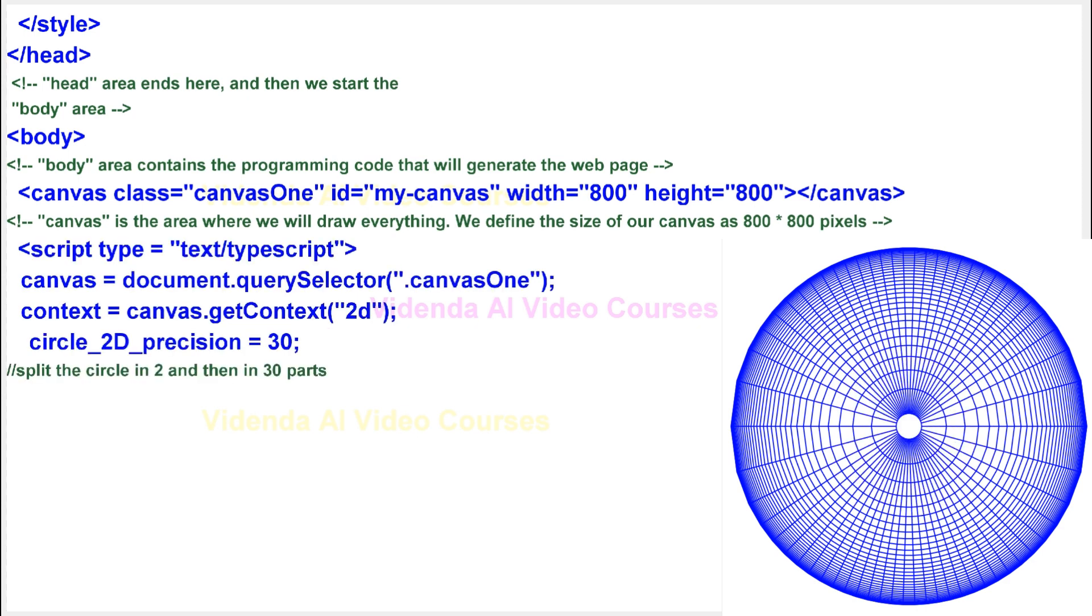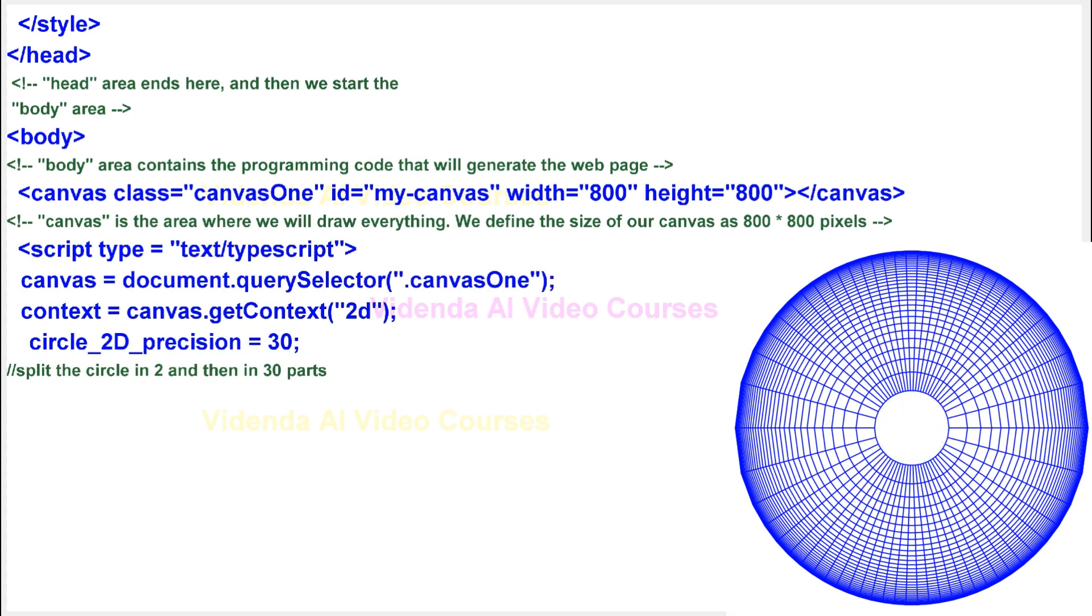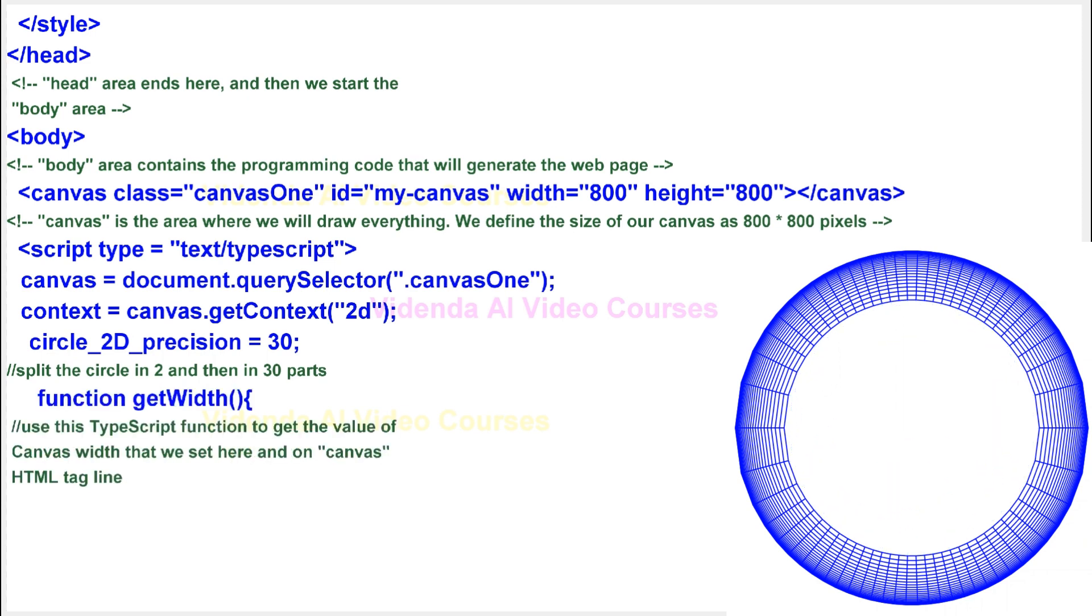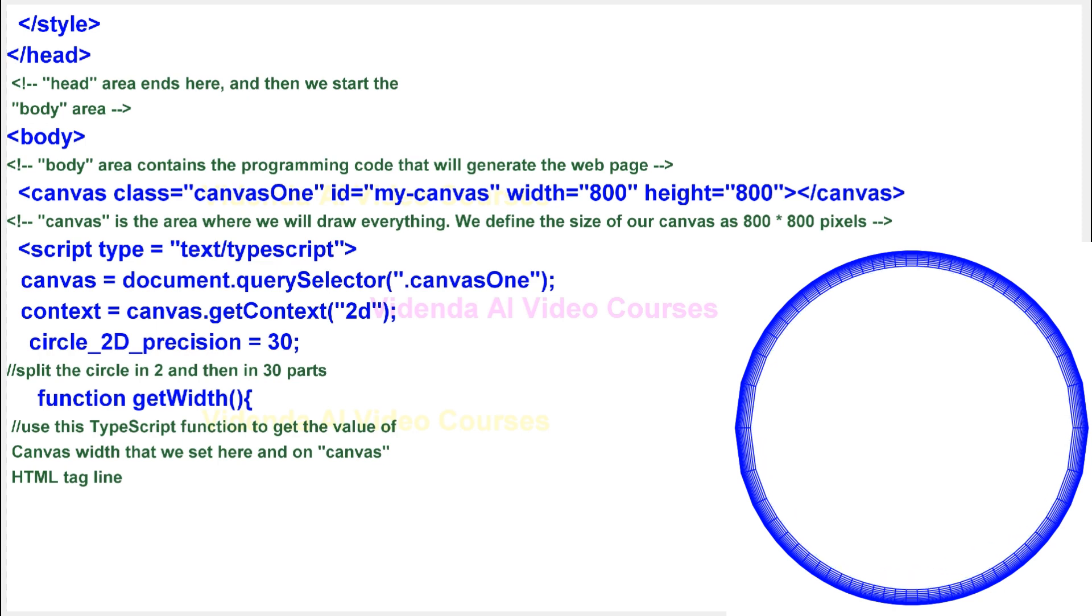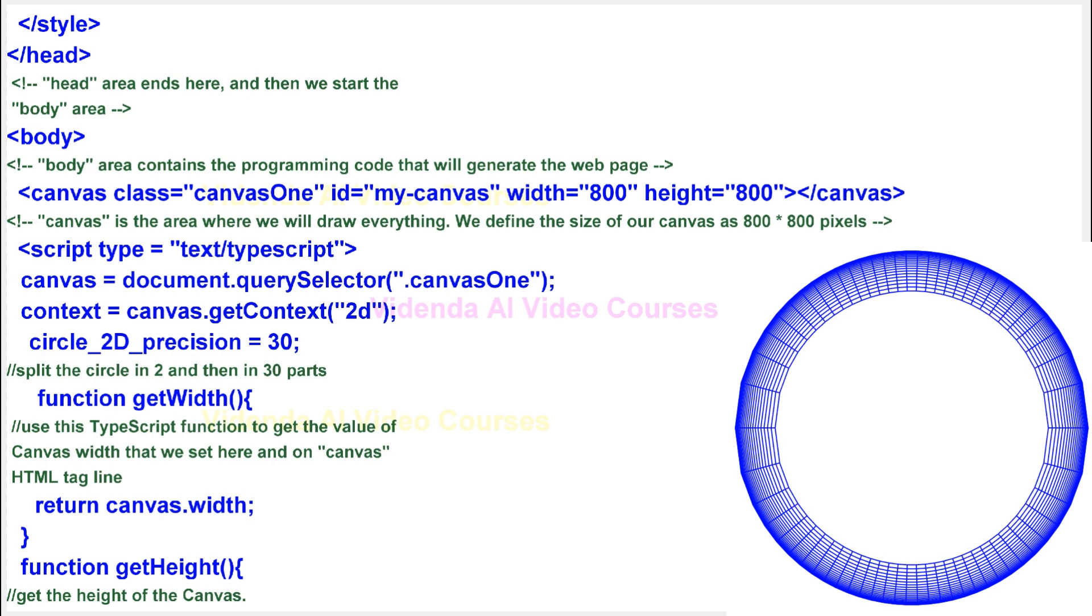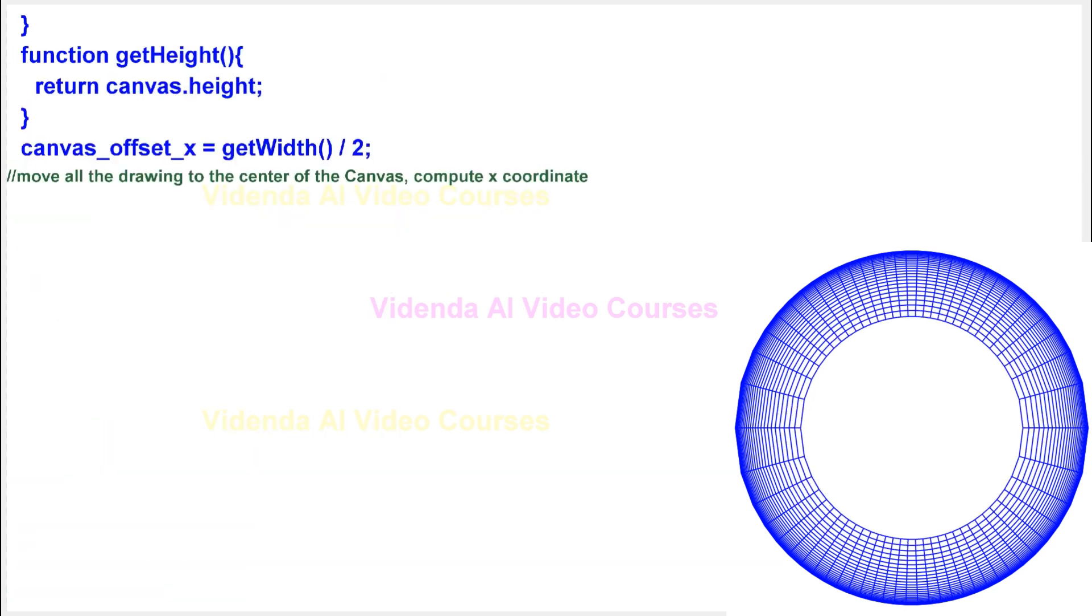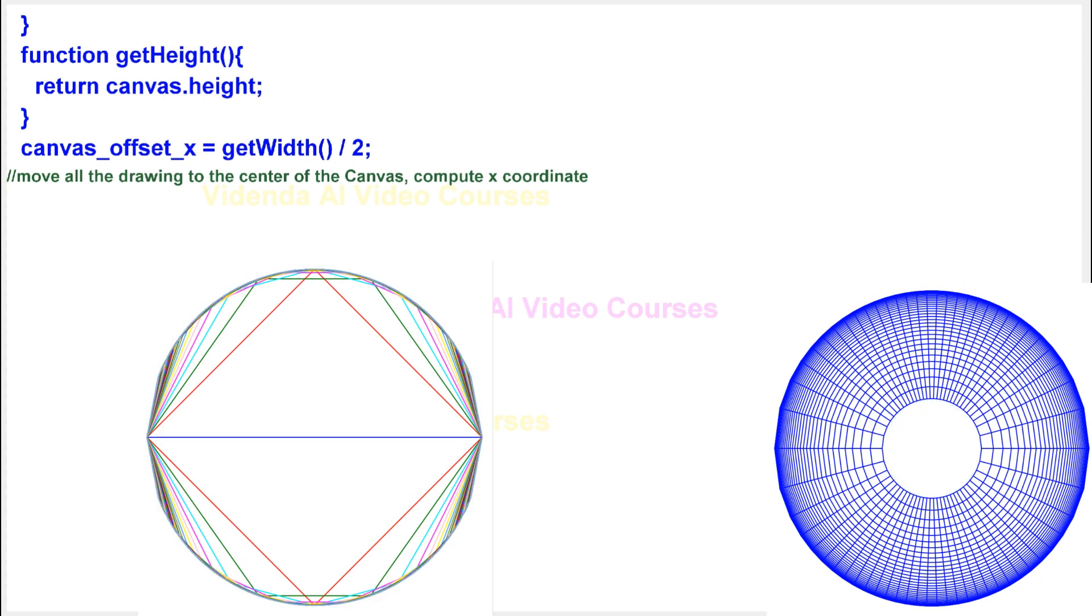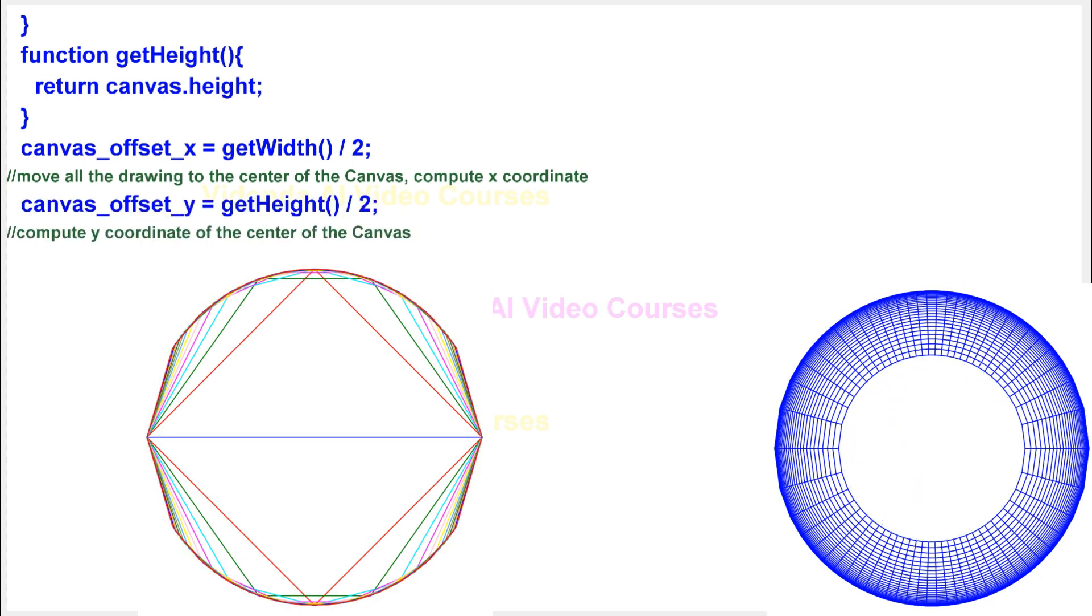Split the circle in 2 and then in 30 parts. Use this TypeScript function to get the value of canvas width that we set here and on canvas HTML tagline. Get the height of the canvas. Move all the drawing to the center of the canvas. Compute x-coordinate. Compute y-coordinate of the center of the canvas.